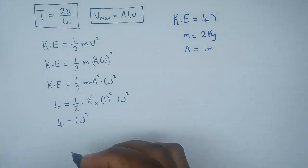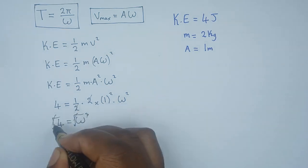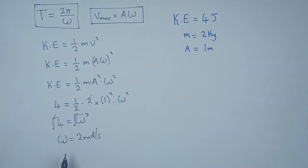If 4 = ω², if we introduce a root to both sides, we can clearly see that the square root of 4 equals 2 radians per second. So our omega is 2. Since we have omega now, we can use that amplitude and mass and substitute into the formula.